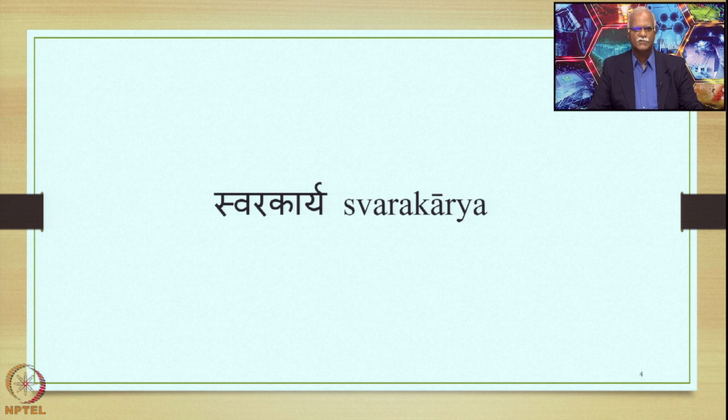In this course, we are focused on the Tatpurusha Samasa. We have seen several features of the Tatpurusha Samasa. We said that there are four types of Samasas in Sanskrit: Avyaibhava, Tatpurusha, Bahubrihi, and Dvandva, stated in this particular order in the Ashtadhyayi, the core text of Paninian Grammar. Panini has composed a number of Sutras to explain the features of the Tatpurusha Samasa in comparison with the Sutras for other Samasas.